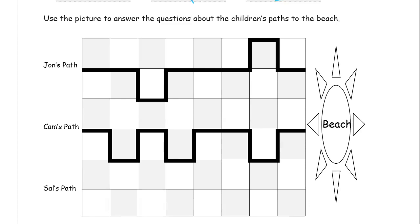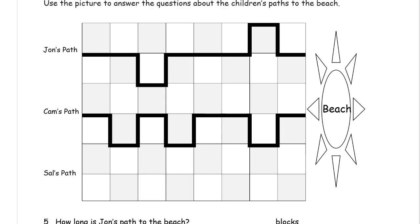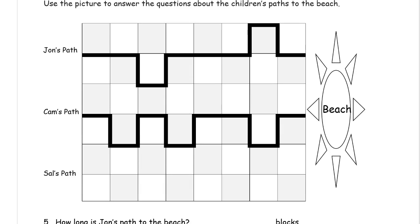And use the picture to answer questions about children's paths to the beach. Here's John's path. Now when you count the blocks, we're counting 1, 2, 3, 4, 5, 6, 7, 8, 9, 10, 11, 12. John's path is 12 blocks.